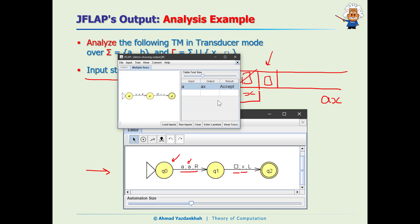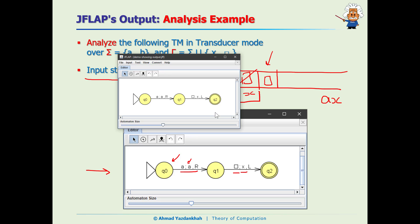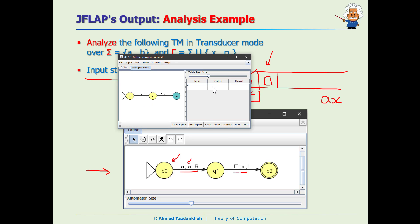And one another thing I want to show you here is if the machine does not stop in an accepting state. I am going to intentionally make this as a regular state and repeat the run again, and as you see it doesn't show the output. So machine should stop in an accepting state, otherwise it does not show the output.